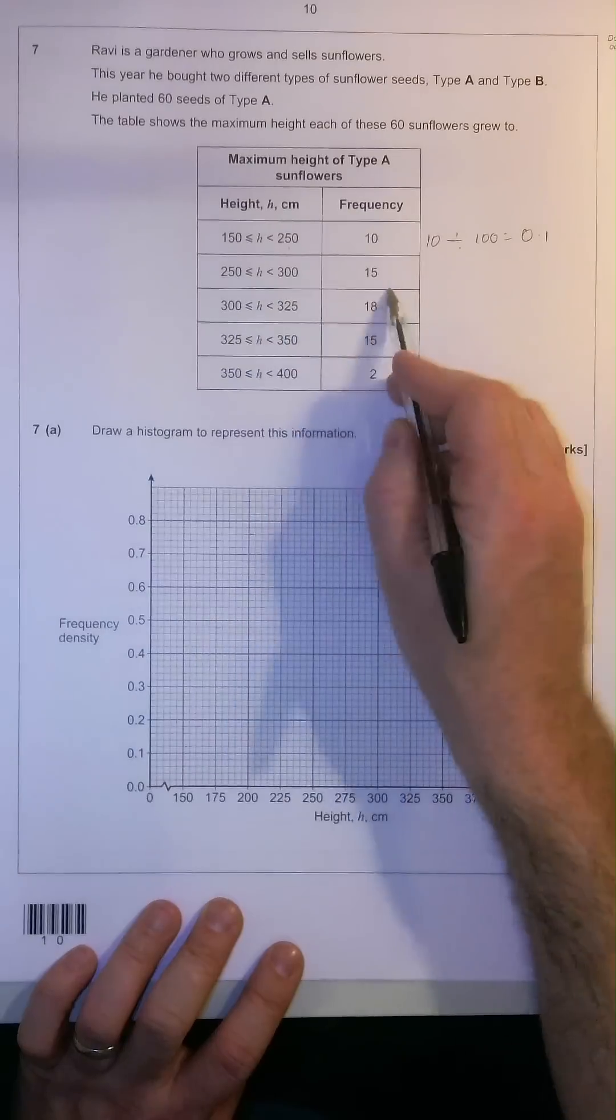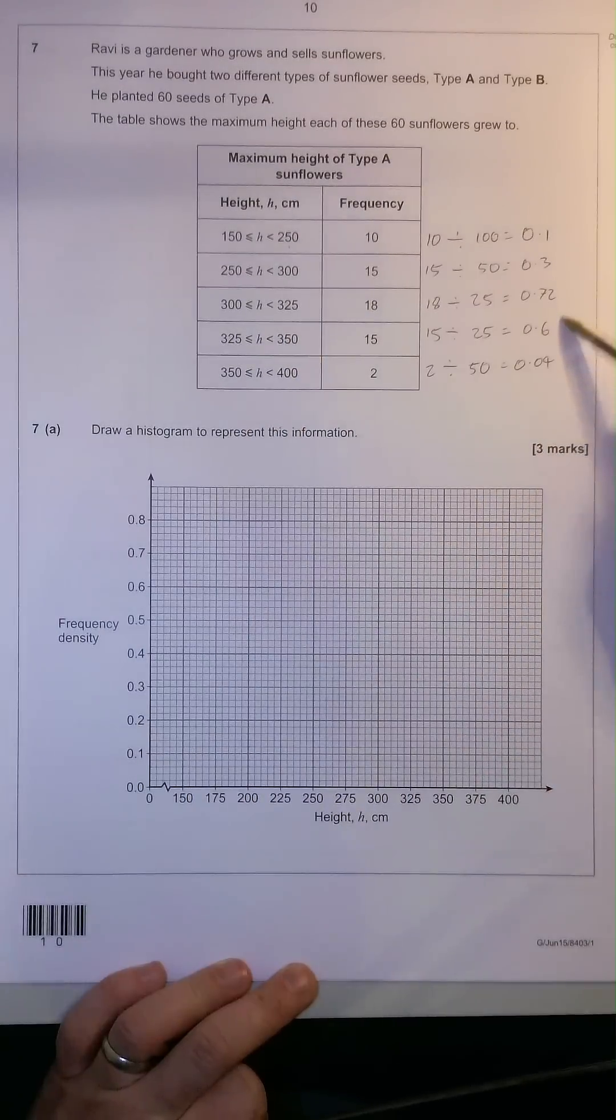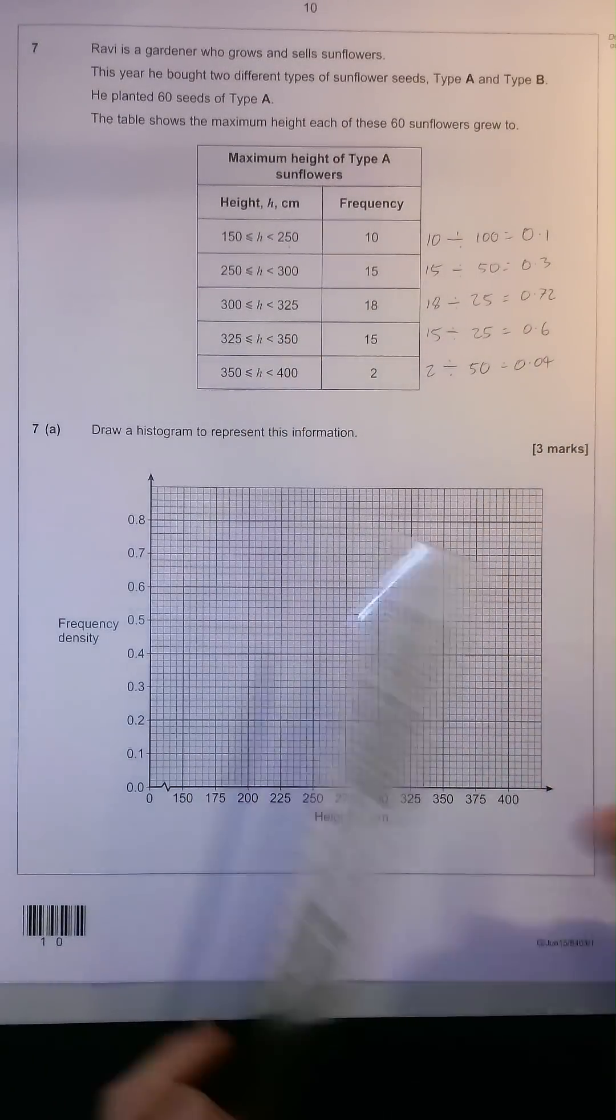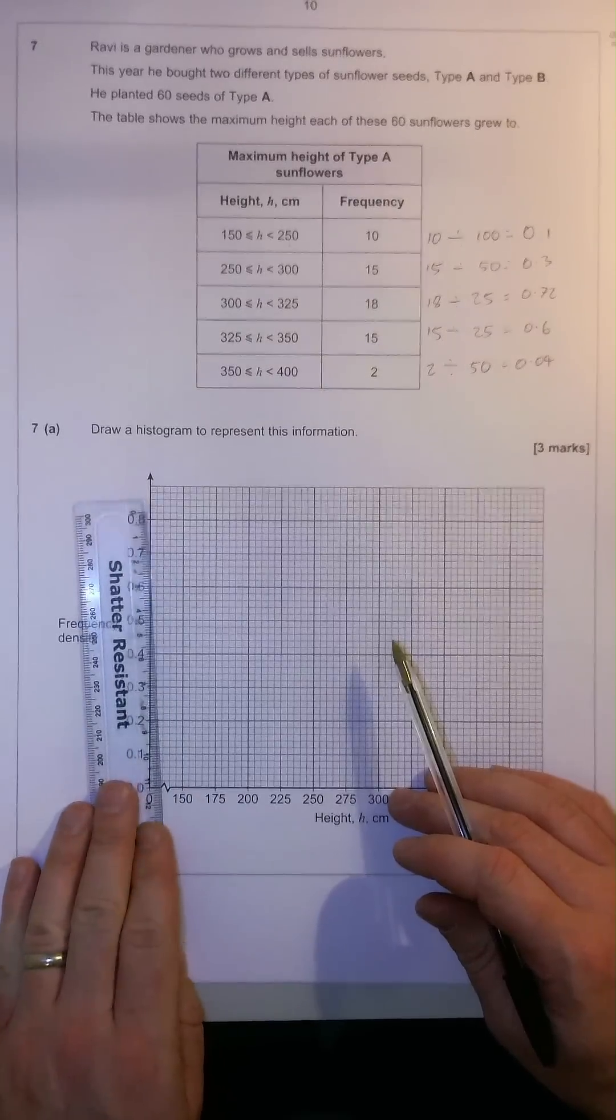Let's do the same for the next four rows. So, we've calculated it for all of our four rows. The next stage is to input the actual columns onto our histogram graph.